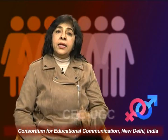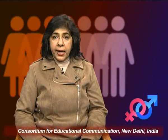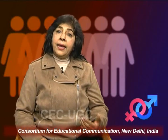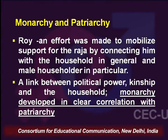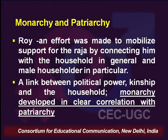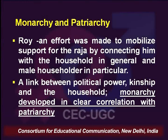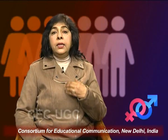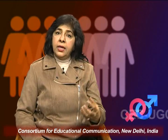From here we move to the next important paradigm: the interrelation that emerged between monarchy and patriarchy. Kumkum Roy has pointed out that an effort was made to mobilize support for the ruler by connecting him with the household in general and with the male householder in particular. As a result, a link between political power, kinship, and the household clearly indicated the emergence of a monarchy with a clear co-relationship with patriarchy. This over-dependence of monarchy on patriarchy clearly kept women away from power politics.